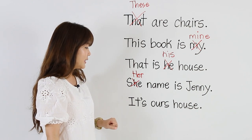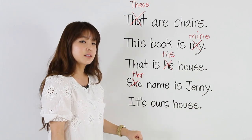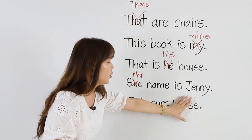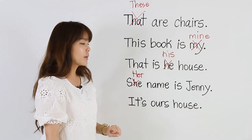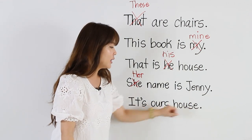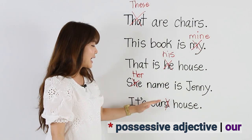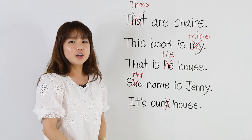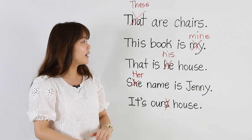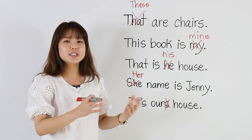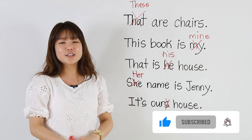And the last one: 'It's ours house.' Now, if we don't have a noun like 'house', we can say 'it's ours.' But since we have a noun, we use the possessive adjective: 'It's our house.' That was the checkup for possessive pronouns, possessive adjectives, this, that, these, and those. I hope you understood and I'll see you in the next video. Bye!